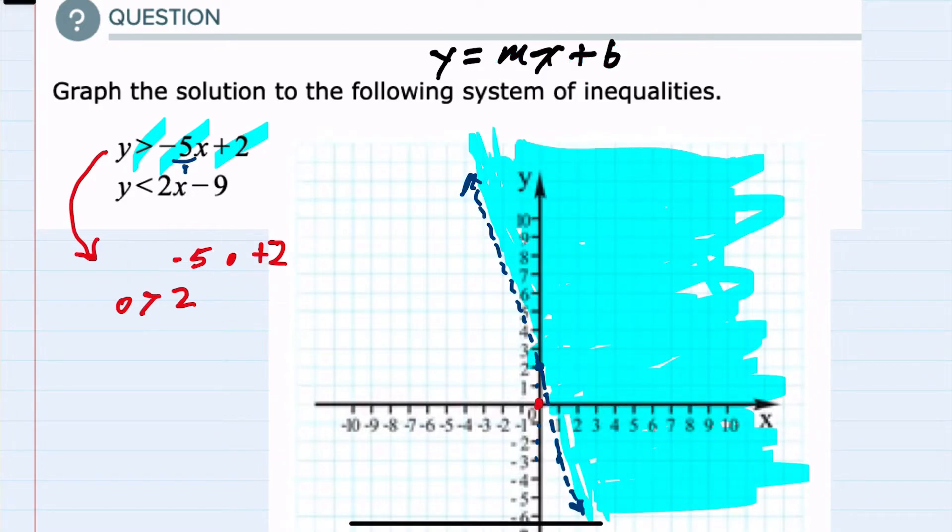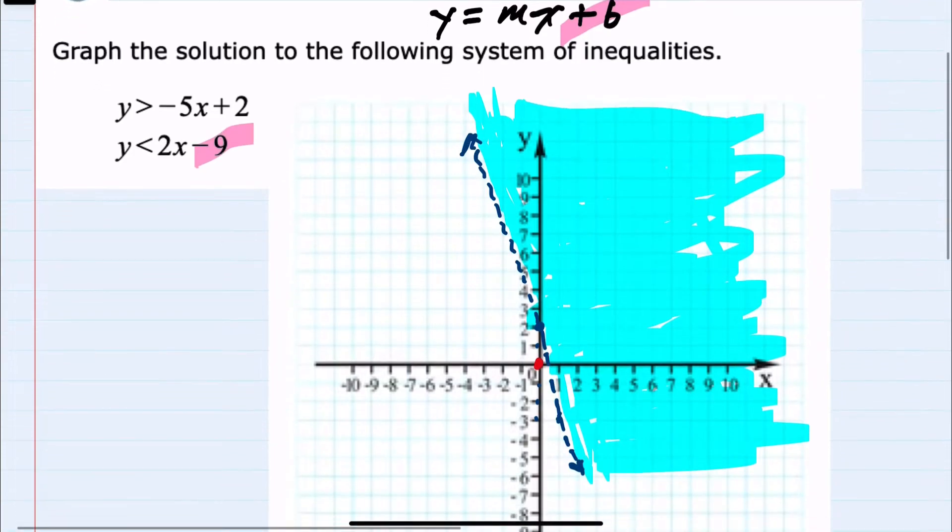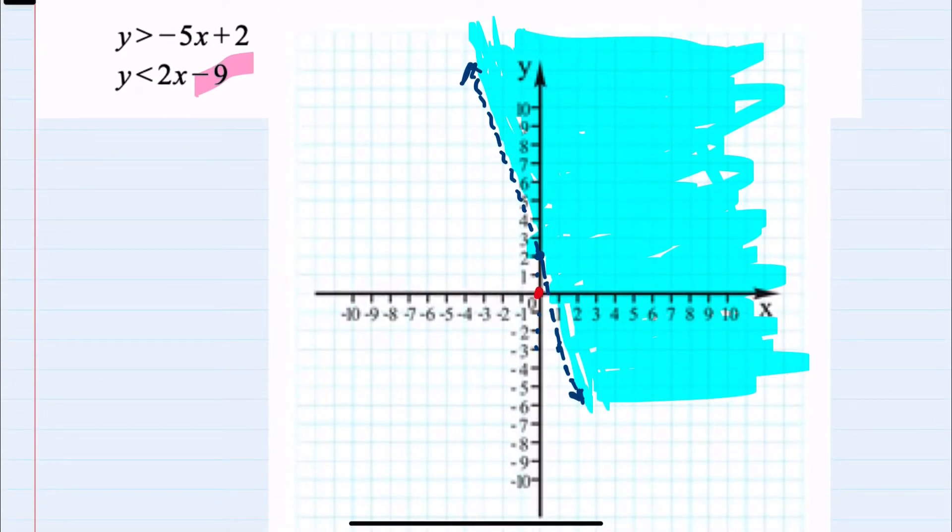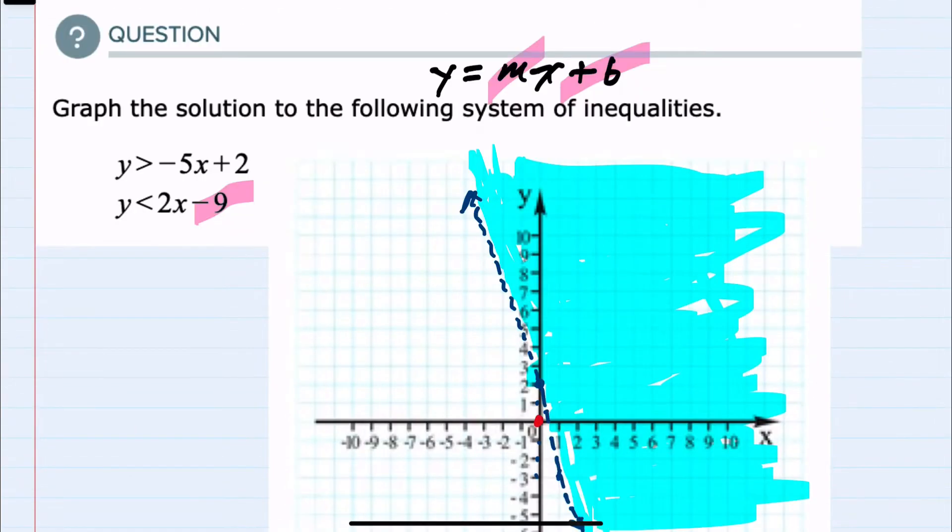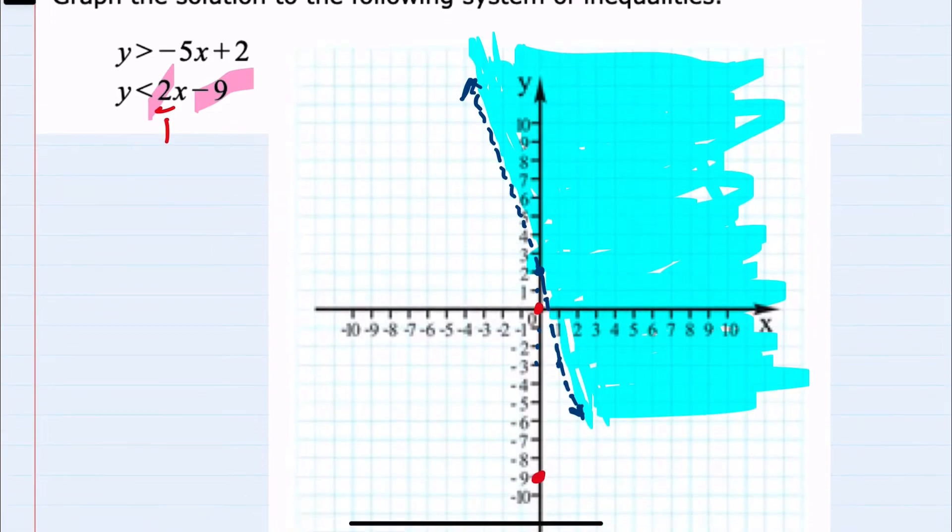Now I will turn my attention to the second inequality, and I'll do that one in red. So again, since it's in y = mx + b format, I can see that the y-intercept here is -9. So I'll scroll down to -9, add my intercept. And then the slope is 2. Since I need a fraction, I'll call it 2/1. From that intercept, I would move up 2 units and over 1.